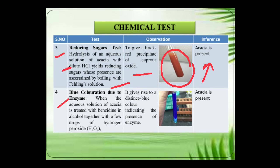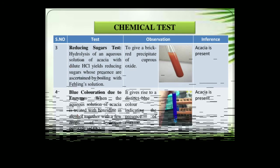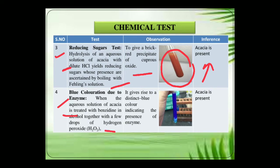Next is the blue coloration test due to the enzyme. When the aqueous solution of acacia is treated with benzidine in alcohol together with a few drops of hydrogen peroxide, it gives rise to a distinct blue colour, indicating the presence of an enzyme. By this we draw the inference that acacia is present in the solution.